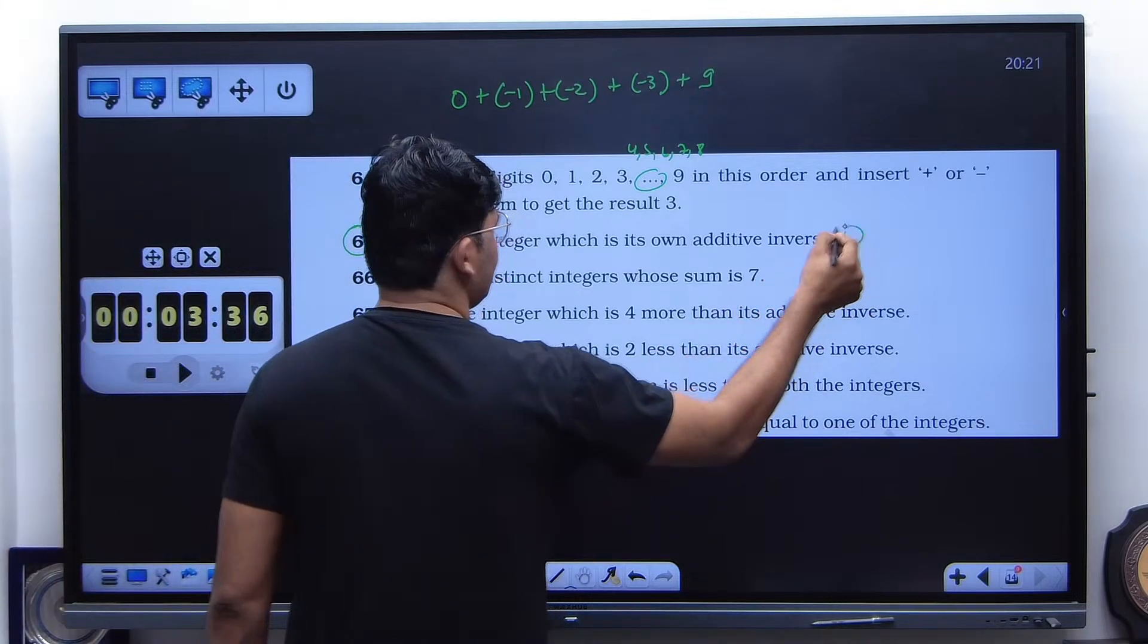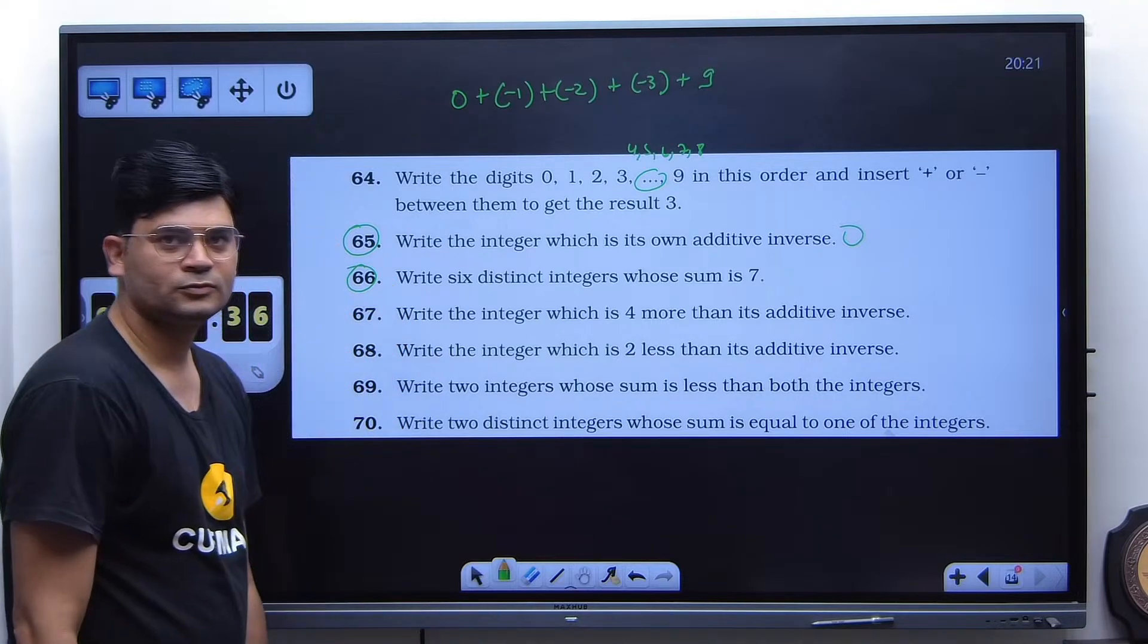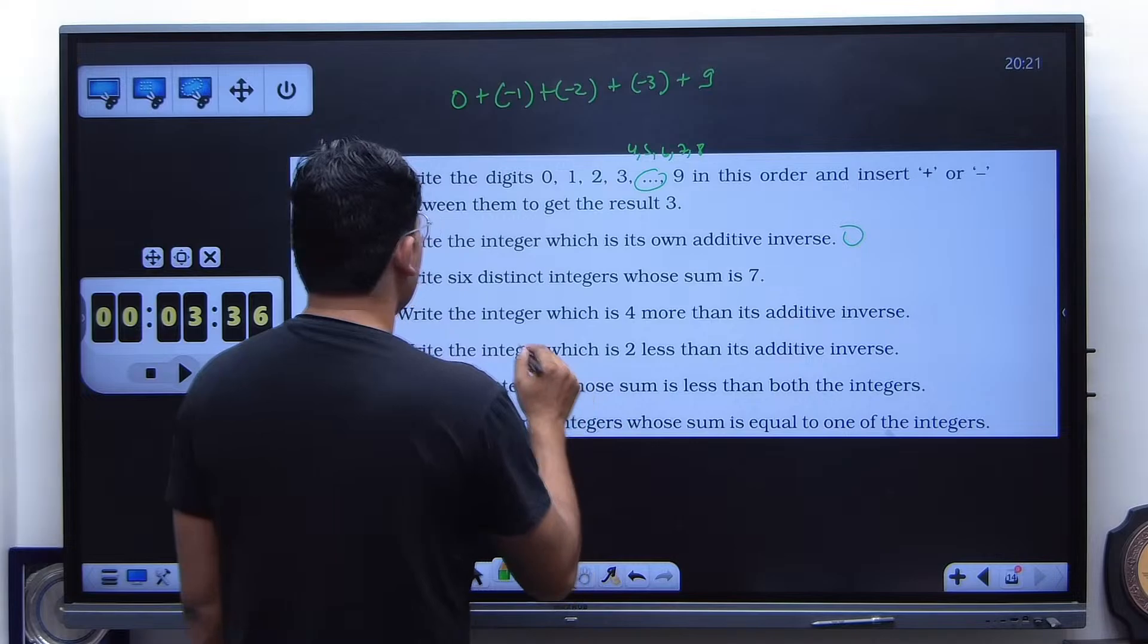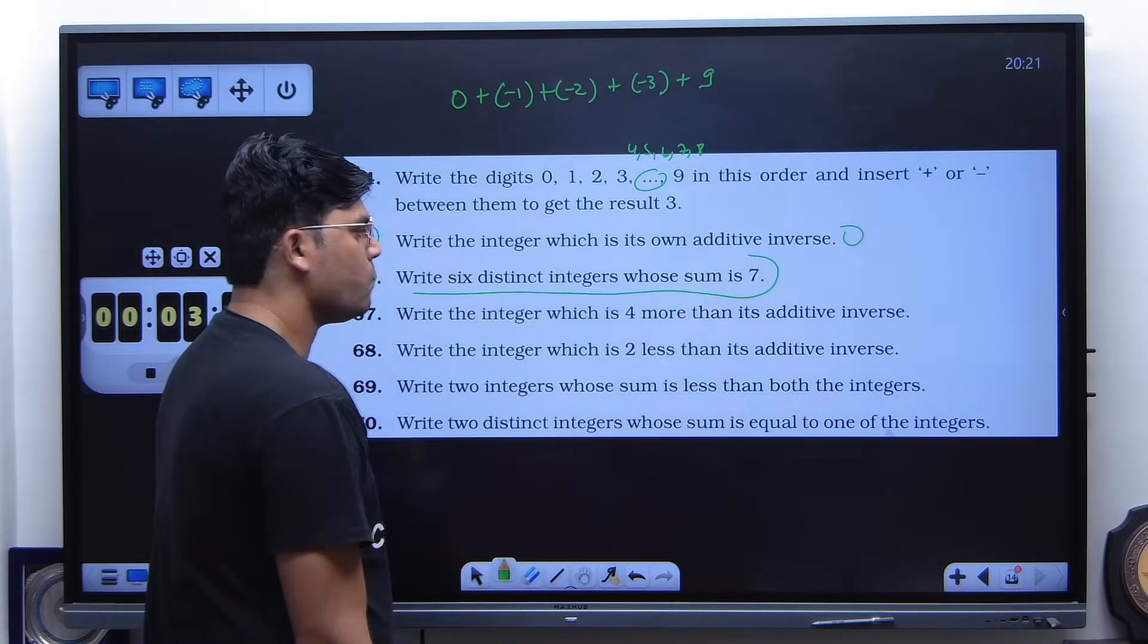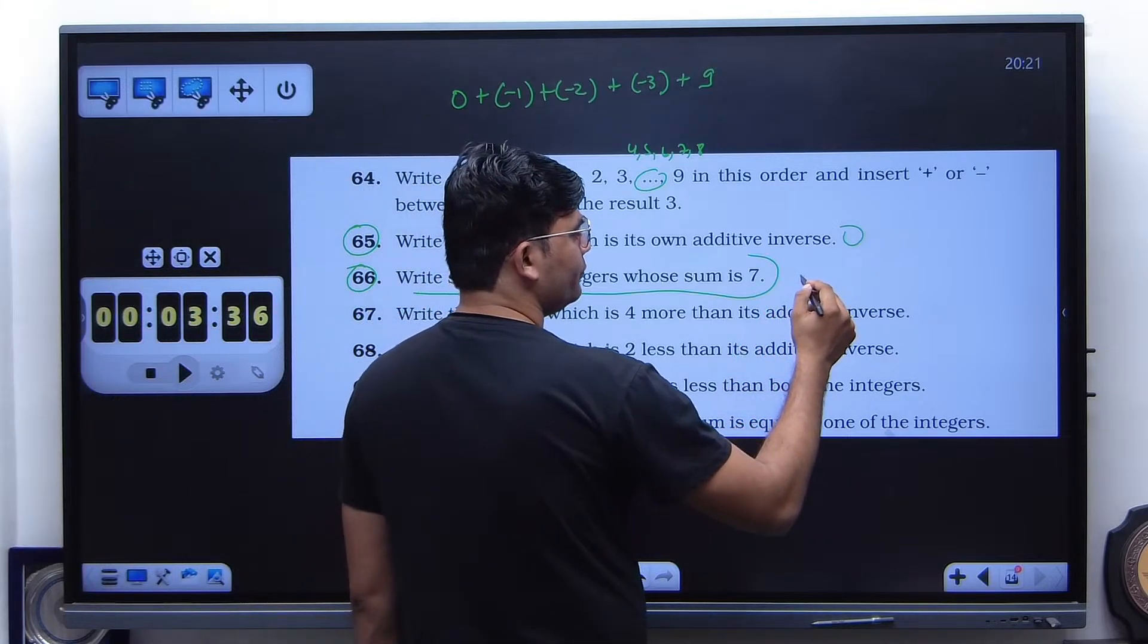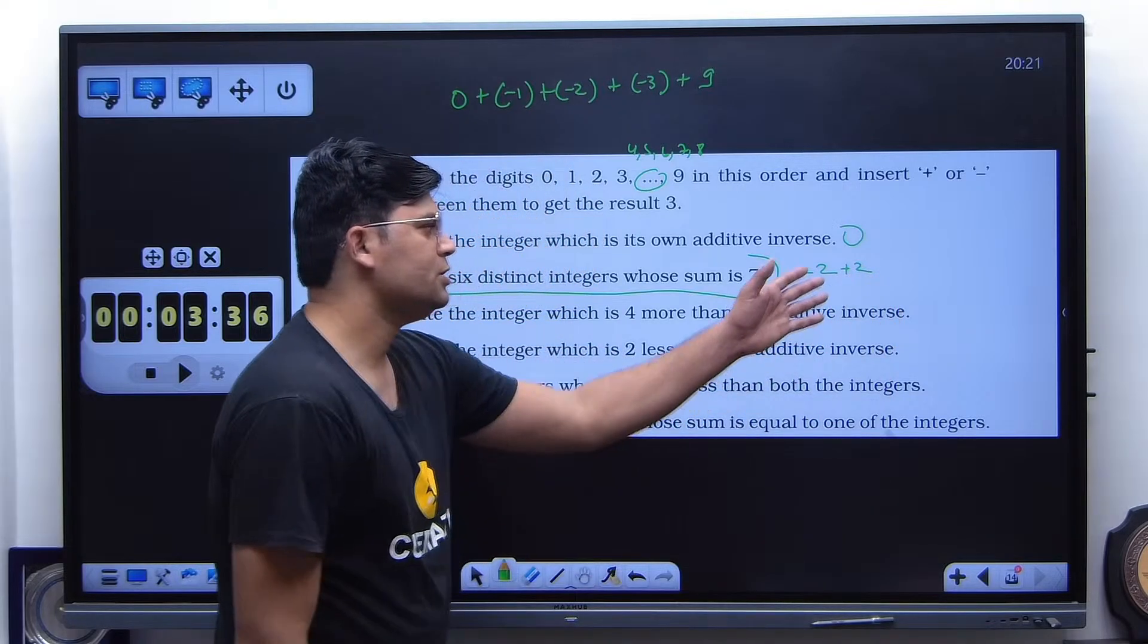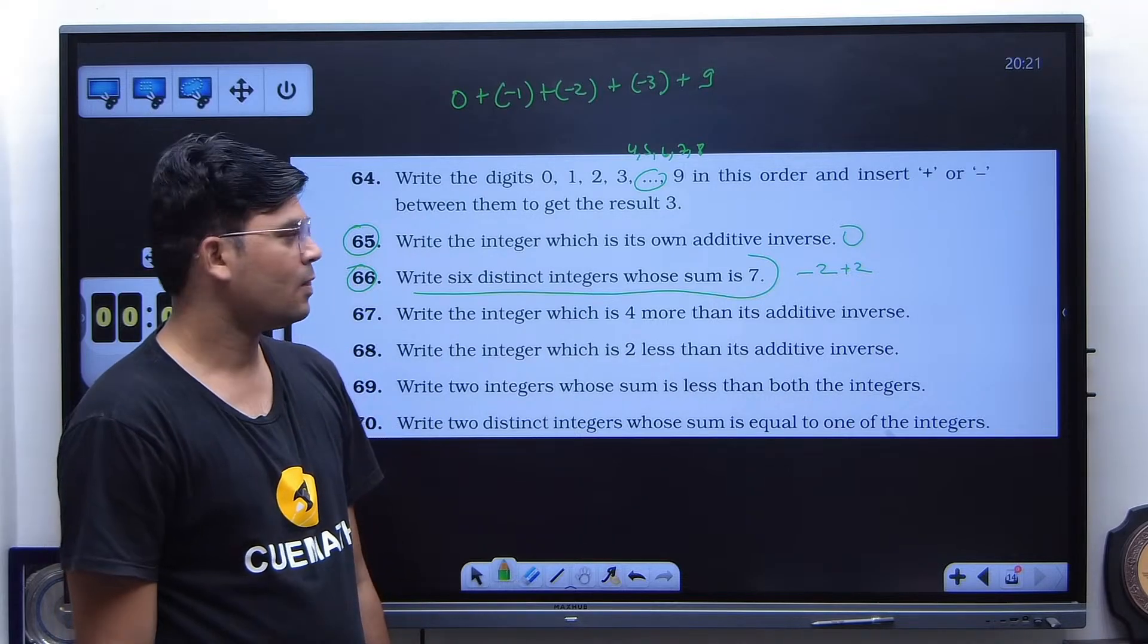What about 66? Minus 2, 2, minus 5, 5, 0. No, no, no. Write 6 distinct integers whose sum is 7. Yes, I am just saying those integers. What are those integers? Minus 2 plus 2. I am just saying that. But this is equal to 0, dear. Yes, I know. They are asking for 6 integers, right? But the sum has to be 7, dear. The number which is, okay, fine.